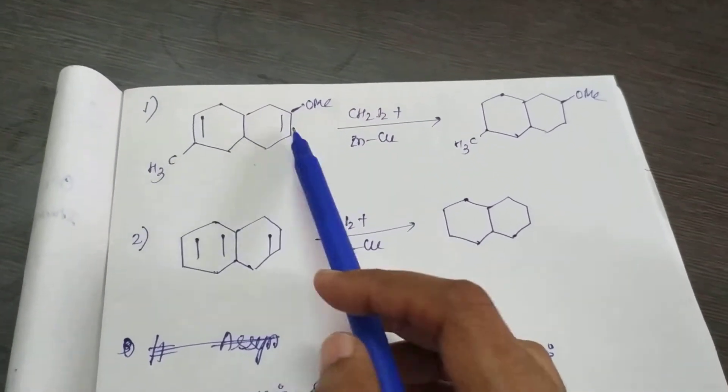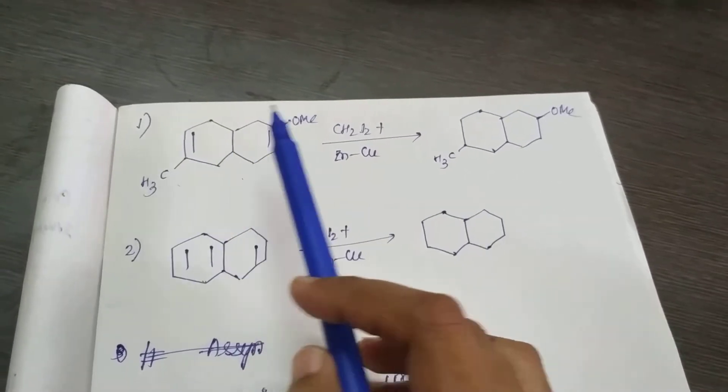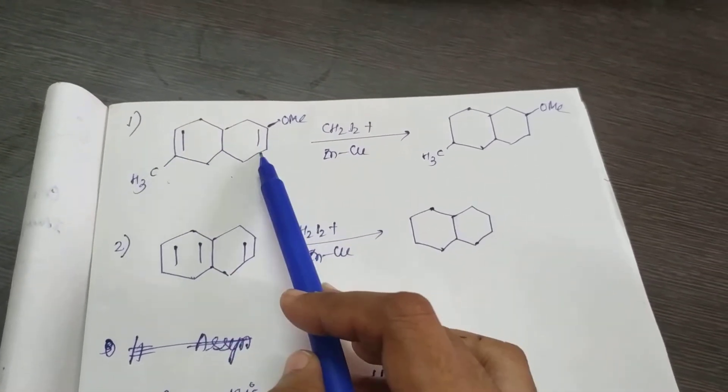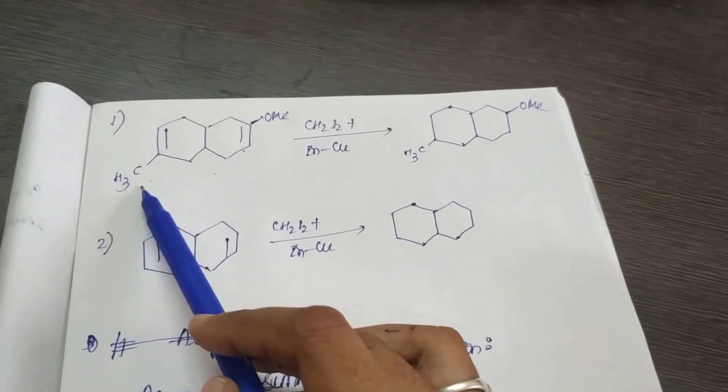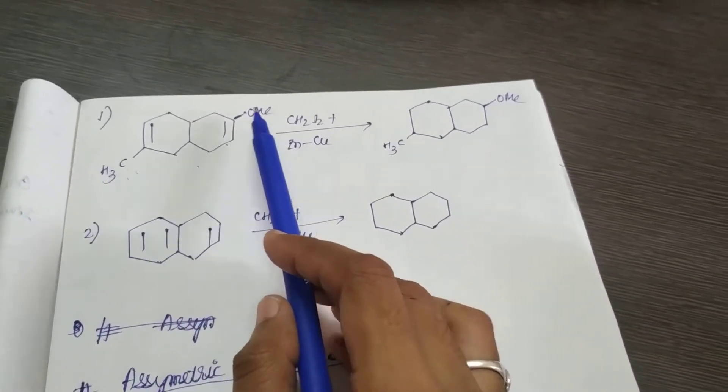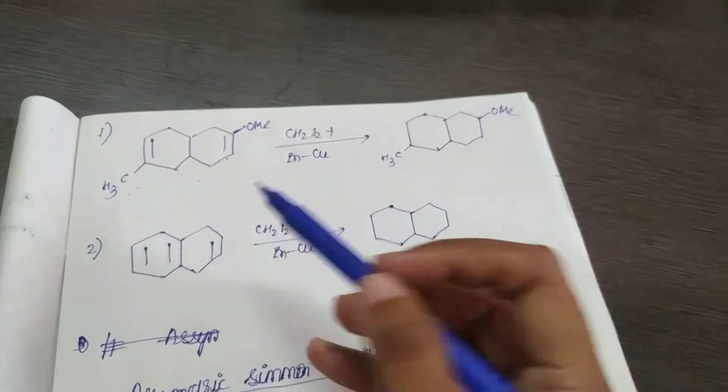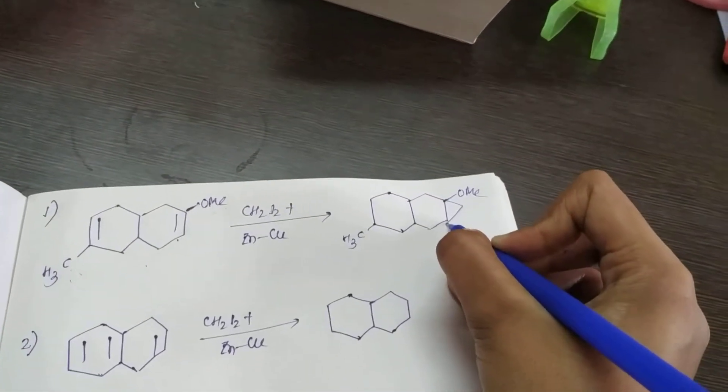Now you see in this part, where will the cyclopropane ring form - either in this side or this side? Definitely in this side, because there is oxygen attached with this bond, and this carbon is more electronegative and more electron rich. Therefore here we will form this cyclopropane, and